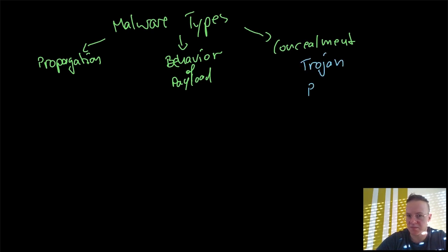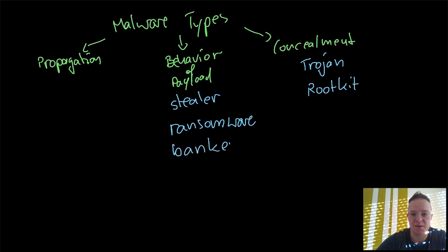Examples for concealment malware types are Trojan, rootkit, subclass of a rootkit is a bootkit. Or the behavior of the payload can be a stealer, can be a ransomware, and it can also be a banker or something else. You get the drift.